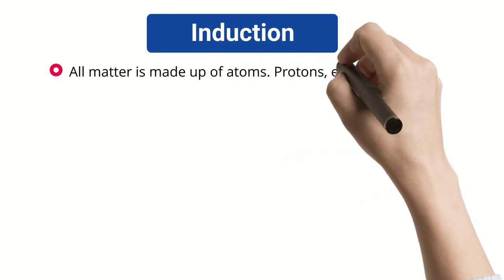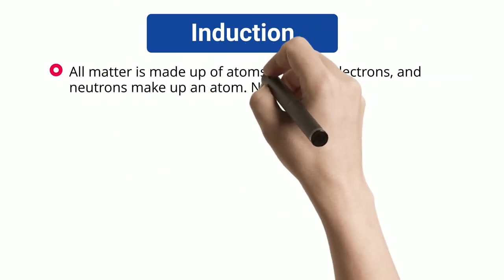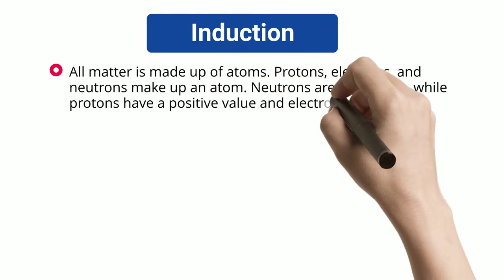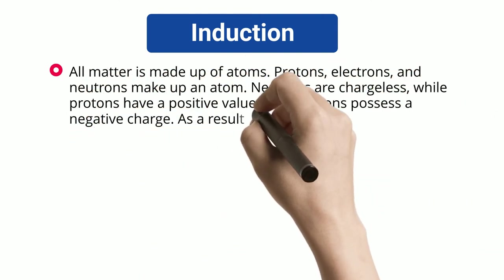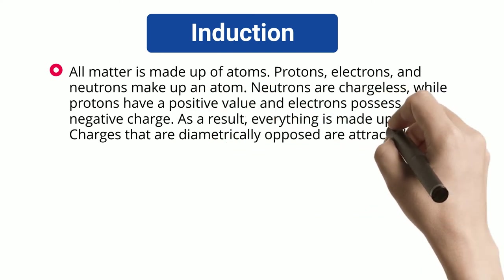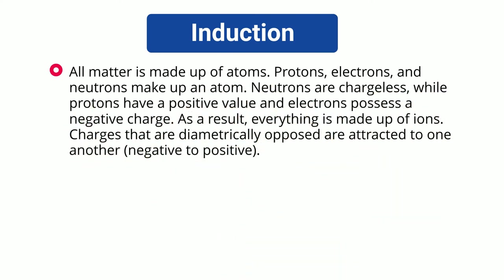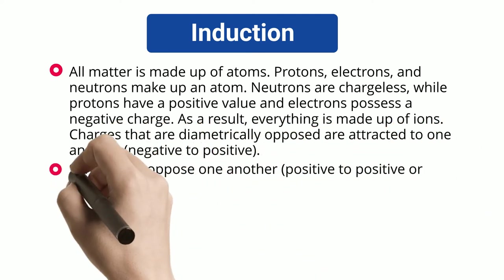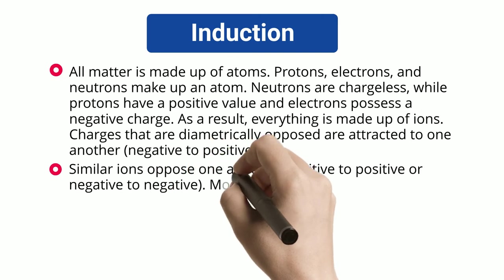All matter is made up of atoms. Protons, electrons, and neutrons make up an atom. Neutrons are chargeless, while protons have a positive value and electrons possess a negative charge. As a result, everything is made up of ions. Charges that are diametrically opposed are attracted to one another — negative to positive — while similar ions oppose one another, positive to positive or negative to negative.